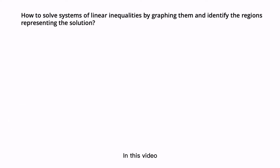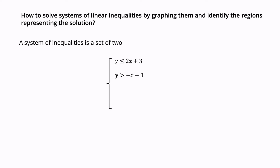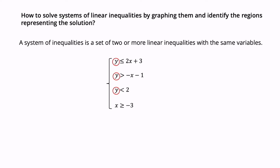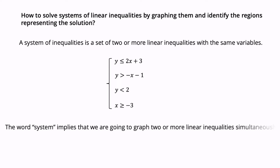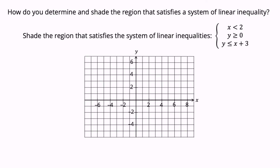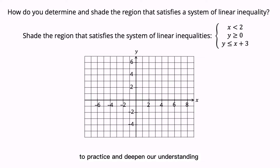In this video, we will learn how to solve systems of linear inequalities by graphing them and identify the regions representing the solution. A system of inequalities is a set of two or more linear inequalities with the same variables, variable Y and variable X. The word system implies that we are going to graph two or more linear inequalities simultaneously. Let's look at a few examples to practice and deepen our understanding.